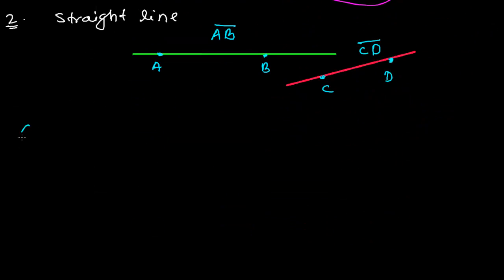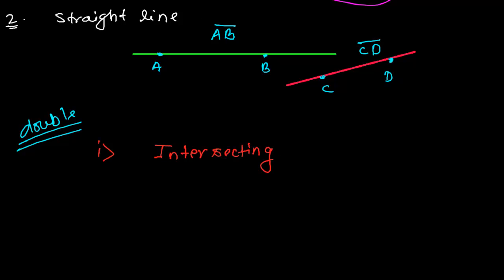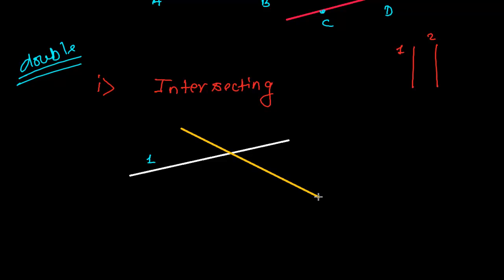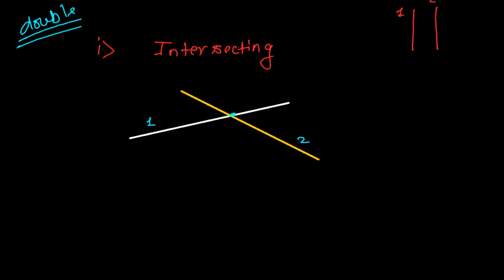Now we will learn about two lines together. The first case is intersecting lines. If you have two lines, one condition is that they may intersect each other. For example, here is the first line and here is the second line — they are intersecting each other at a point. So two lines may be intersecting to each other.